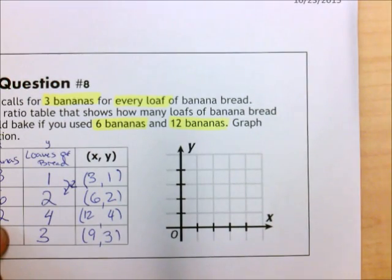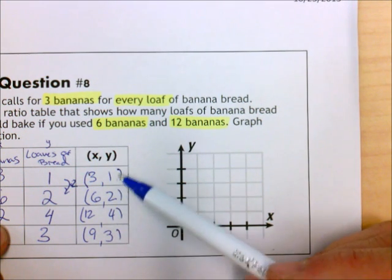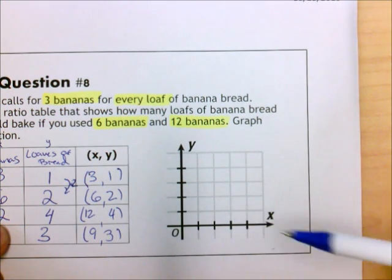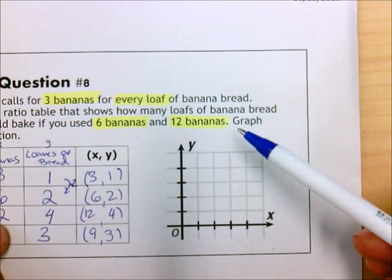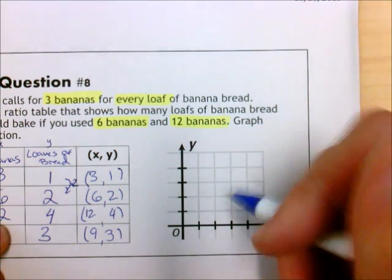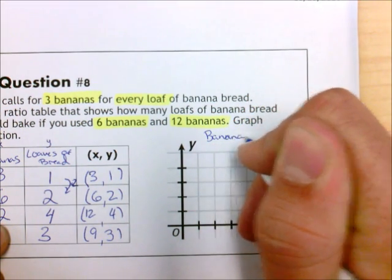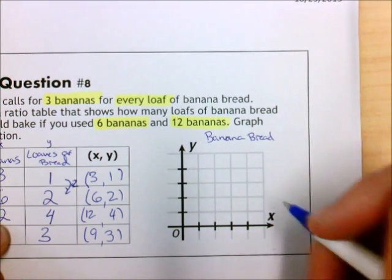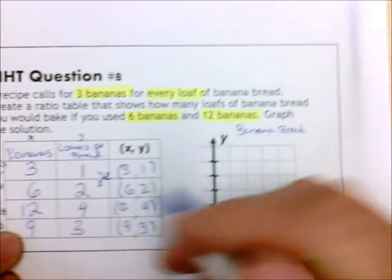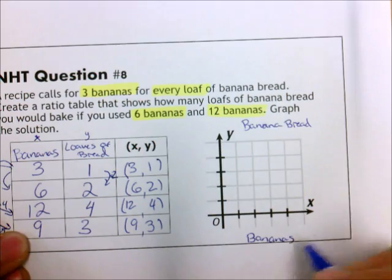Now comes the graphing portion. I need to graph these ordered pairs onto my graph here. But before I can do that, I need a few things. First things first, I need to have a title. So what were we talking about? We were talking about banana bread. What were my x's down here? My x's were bananas. What were my y's? Loaves of bread.